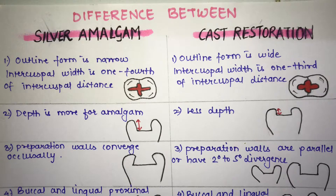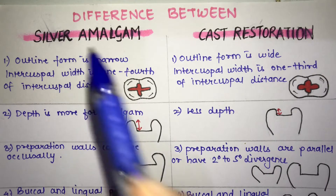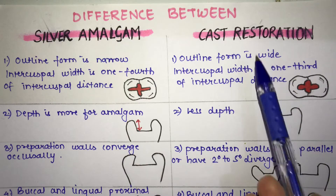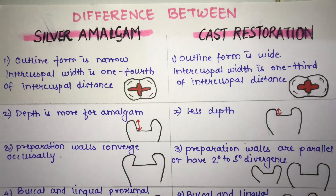Hello everyone, welcome back. In a previous video we saw the difference between silver amalgam restoration and composite restoration. Now in this video we are going to see the difference between silver amalgam restoration and cast restoration. Cast restoration includes inlays and onlays.